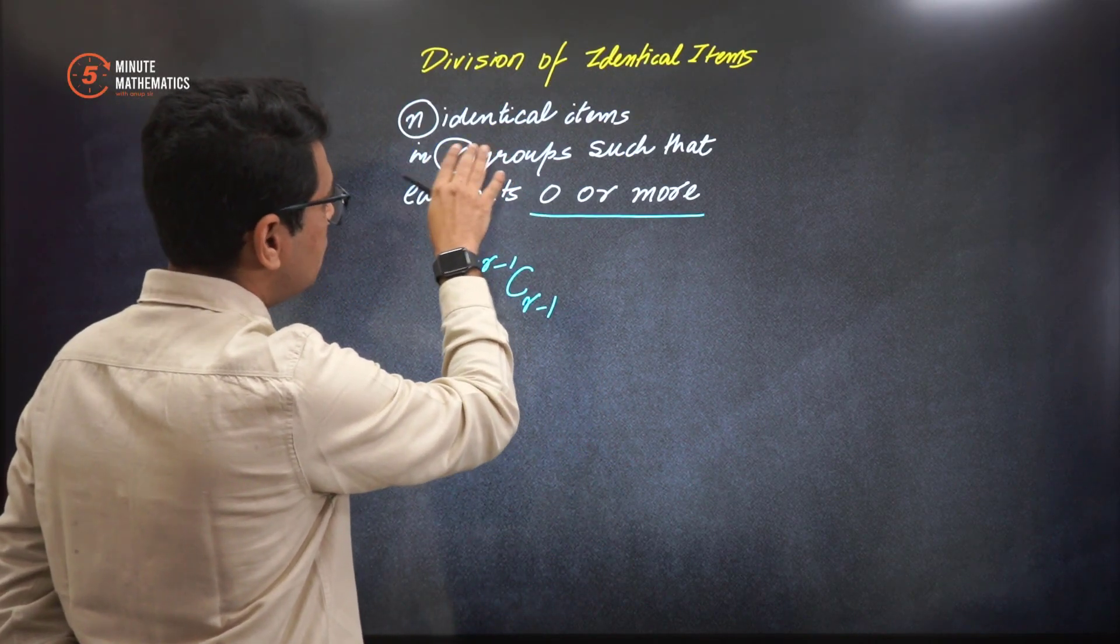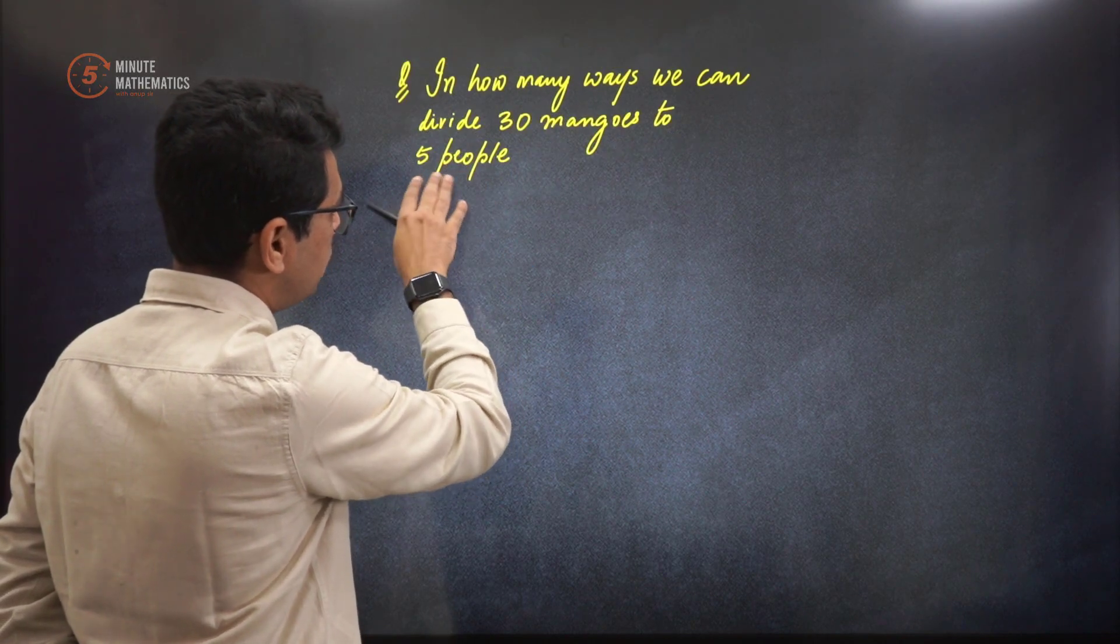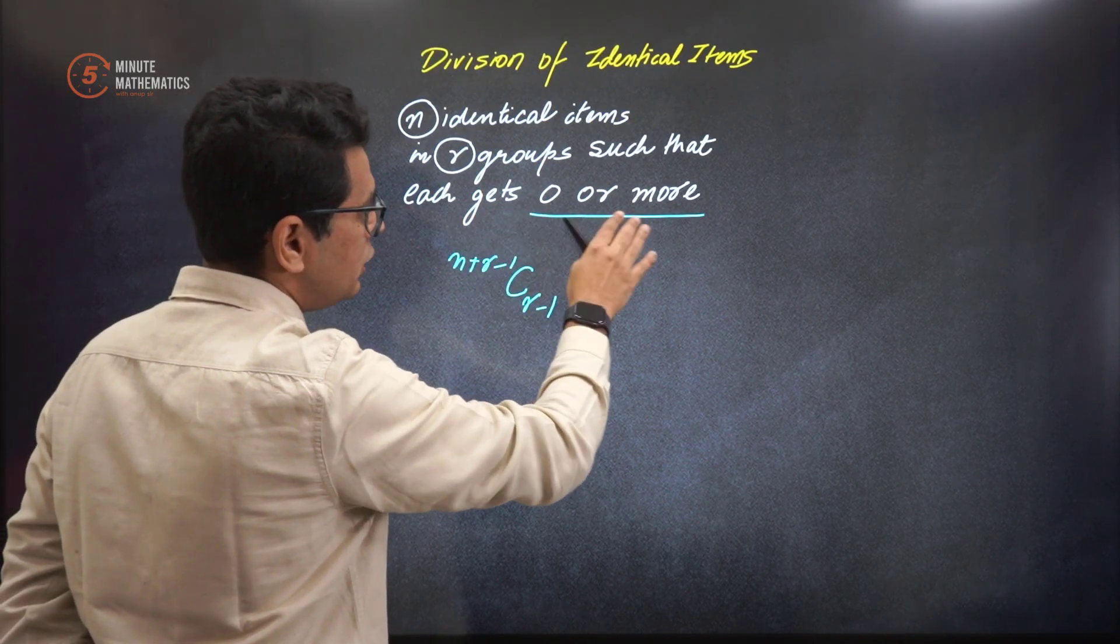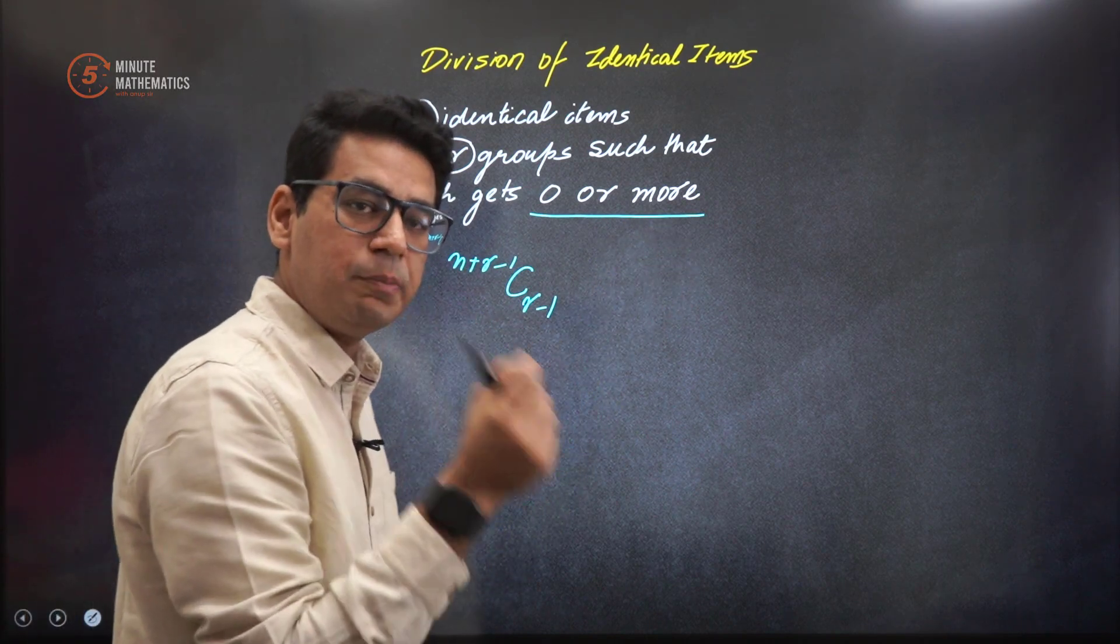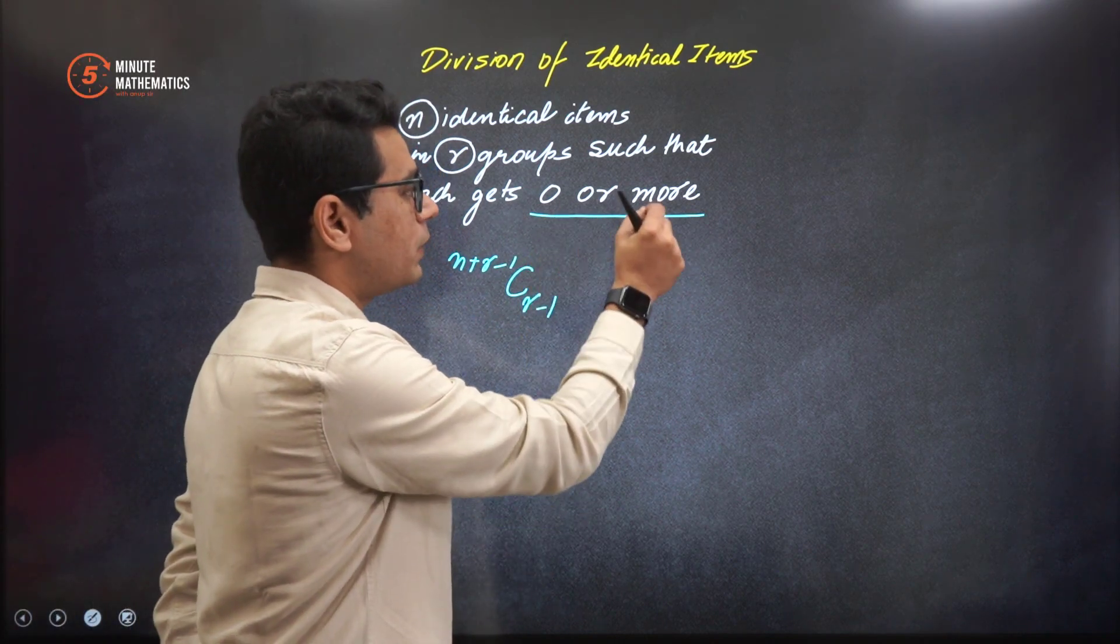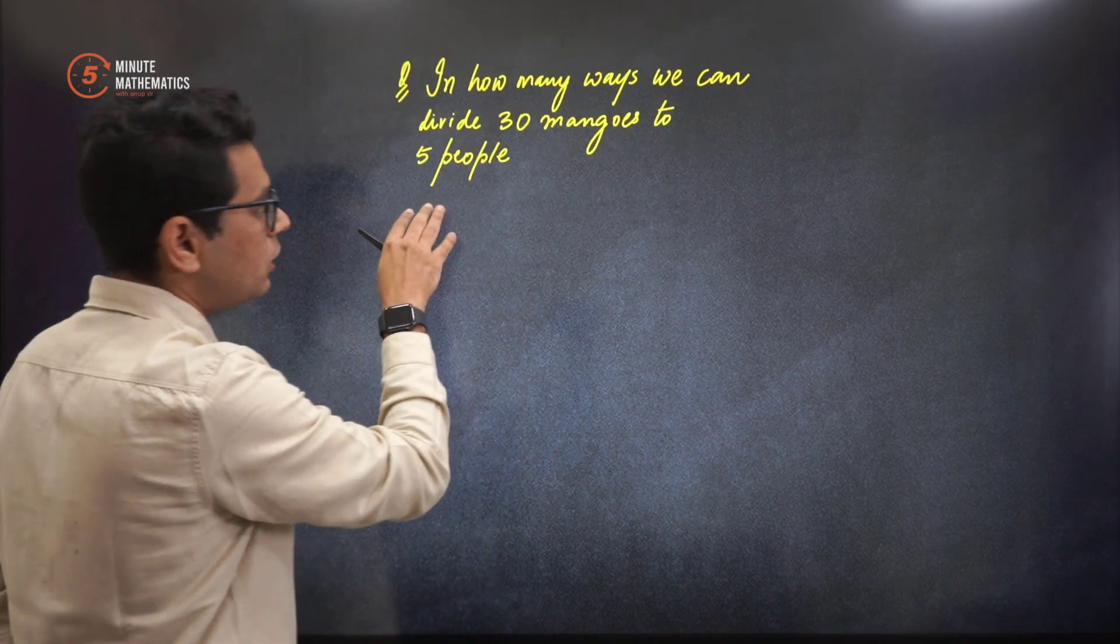We have to divide that into R groups. Here the groups were 5, right? Such that each gets 0 or more. That means, what do you mean? This is a very important thing—that each group gets 0 or more. So in this particular context of the equation...